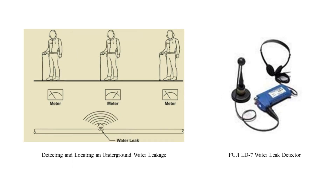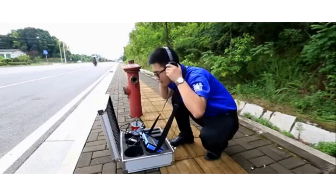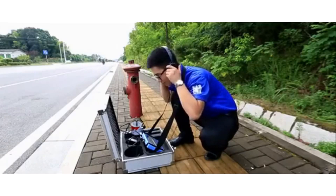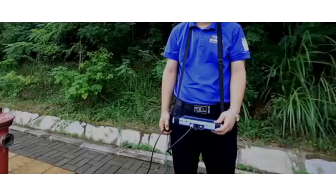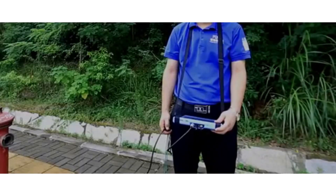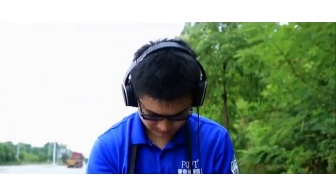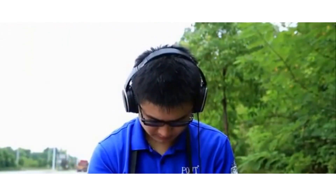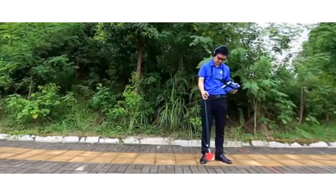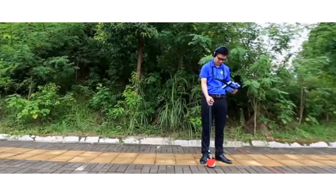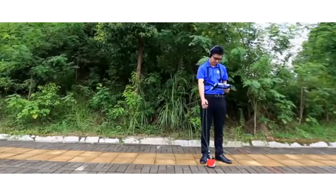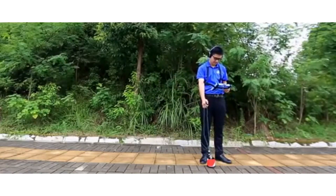In the conventional procedure, a leakage detecting device is used as shown here. First, the operator has to wear the device headphones. Then, the geophone has to be kept on the earth. Next, while adjusting the amplifier volume, the operator has to listen for the sound of a leakage. This has to be repeated while placing the geophone in different places, until the maximum sound of the water leakage is heard, which implies that it is the top of the leakage.